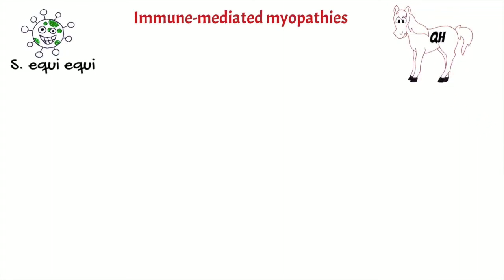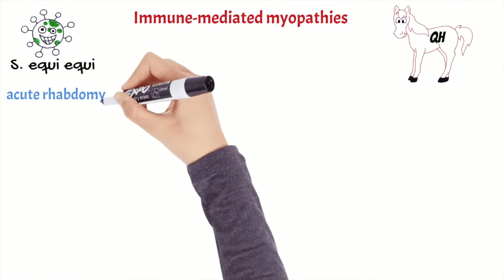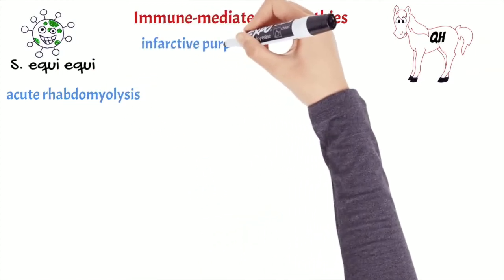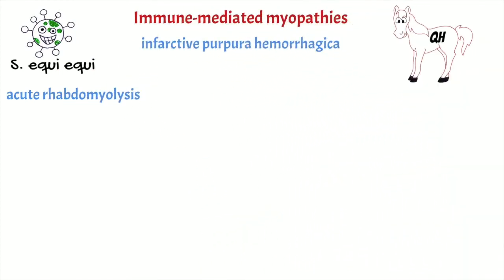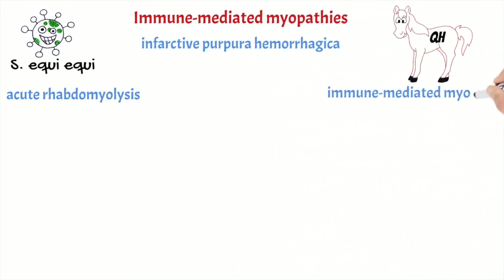There are three principal types of immune-mediated myopathies: acute rhabdomyolysis, infarctive purpura hemorrhagica, and immune-mediated myositis.